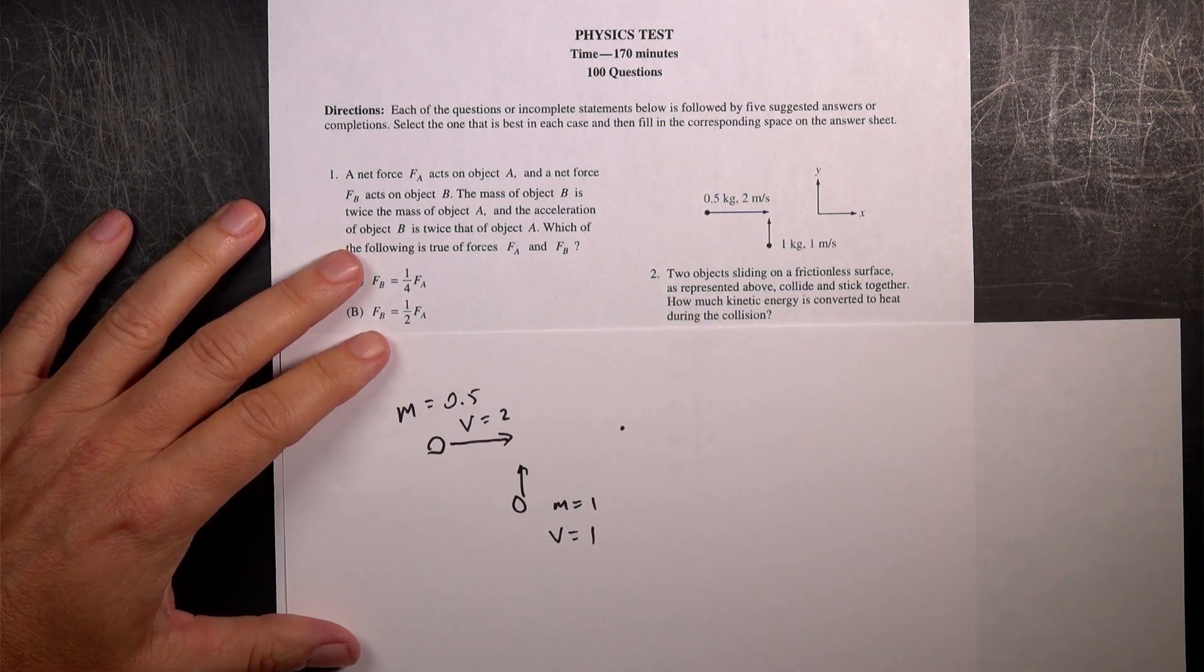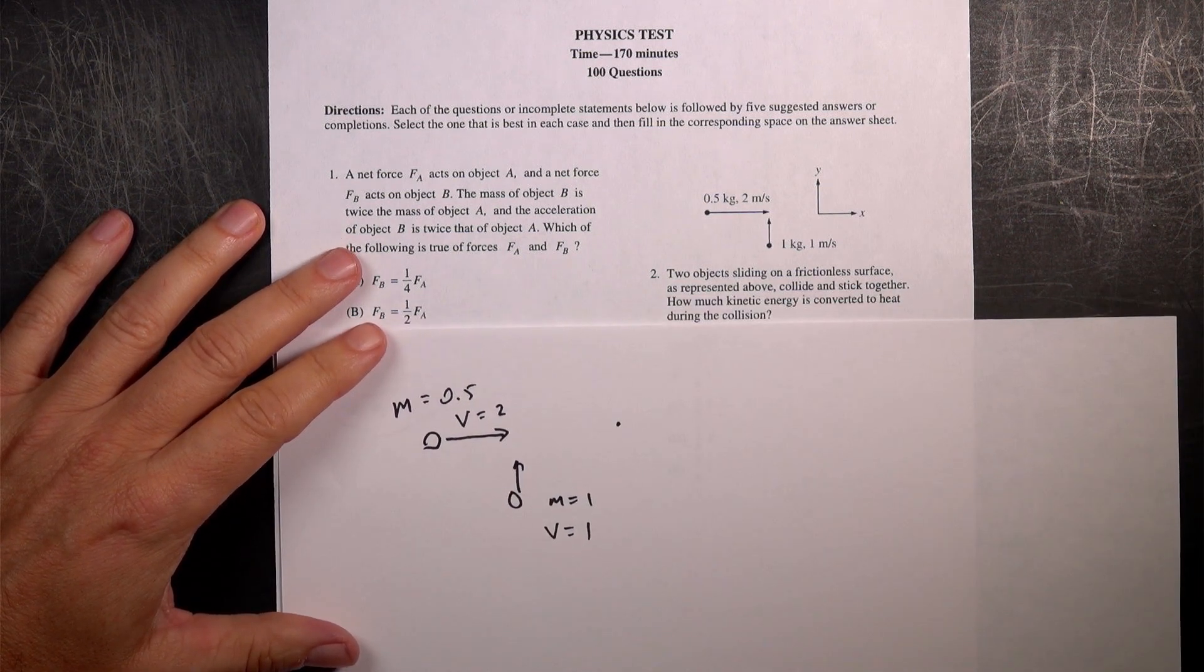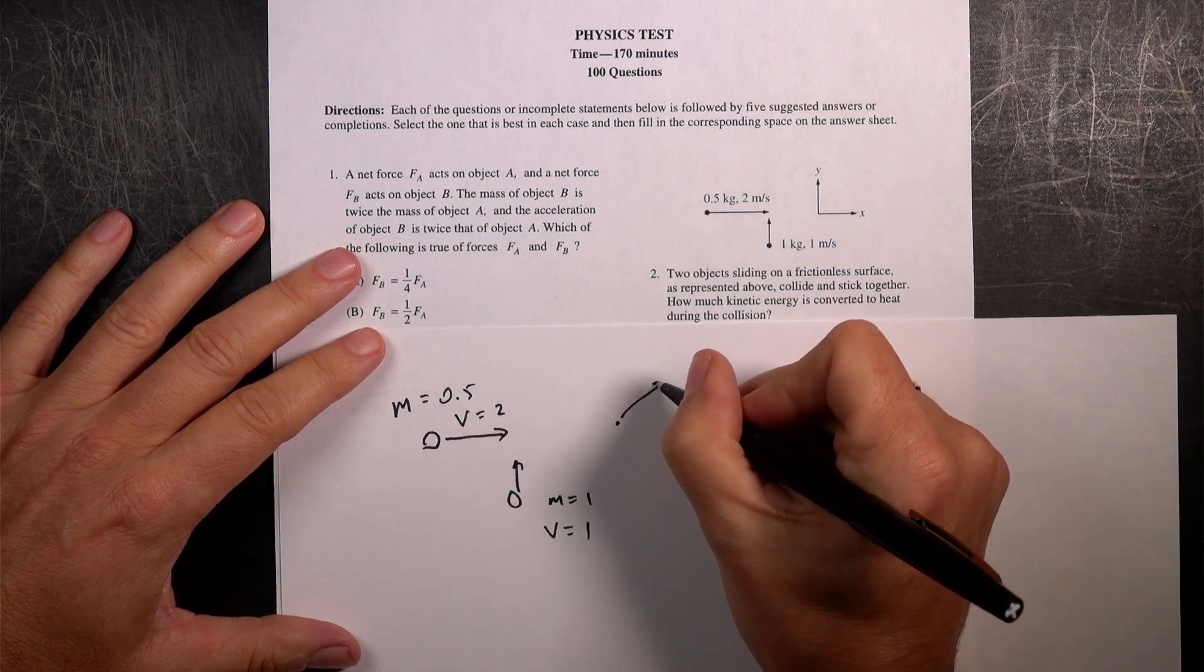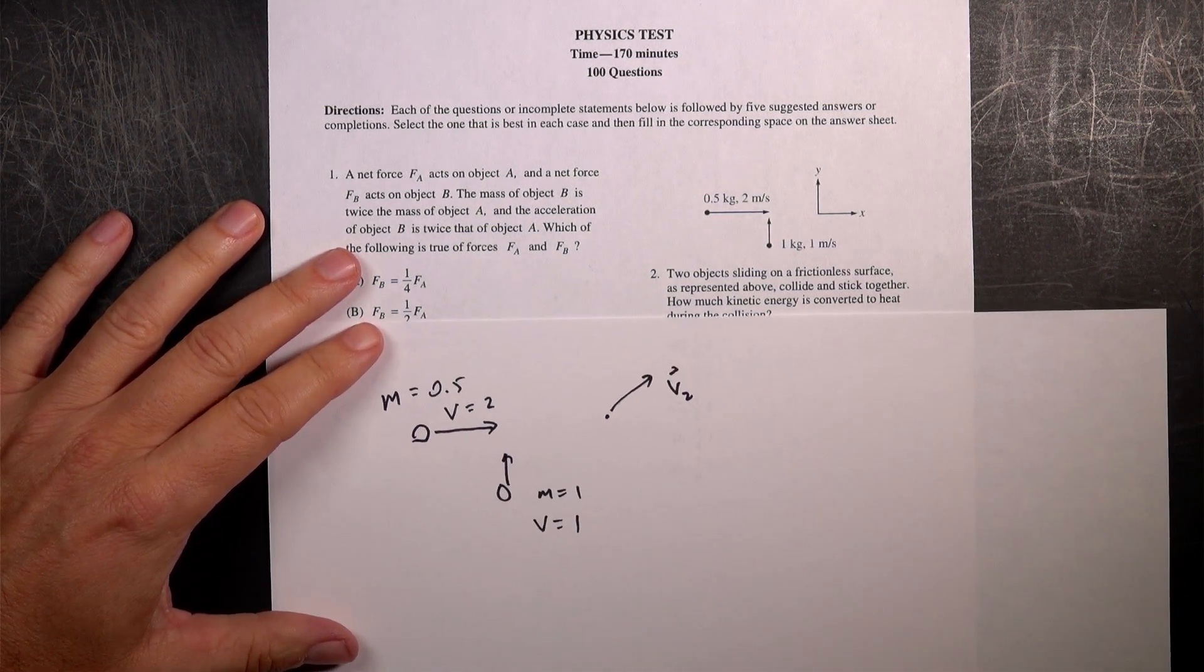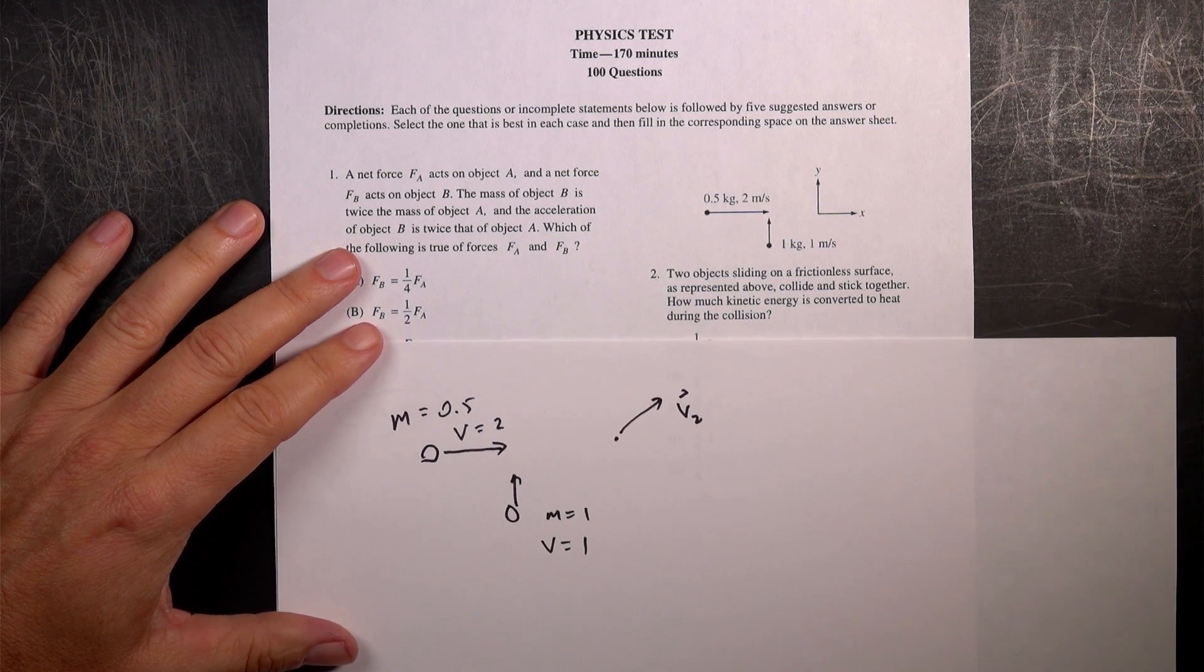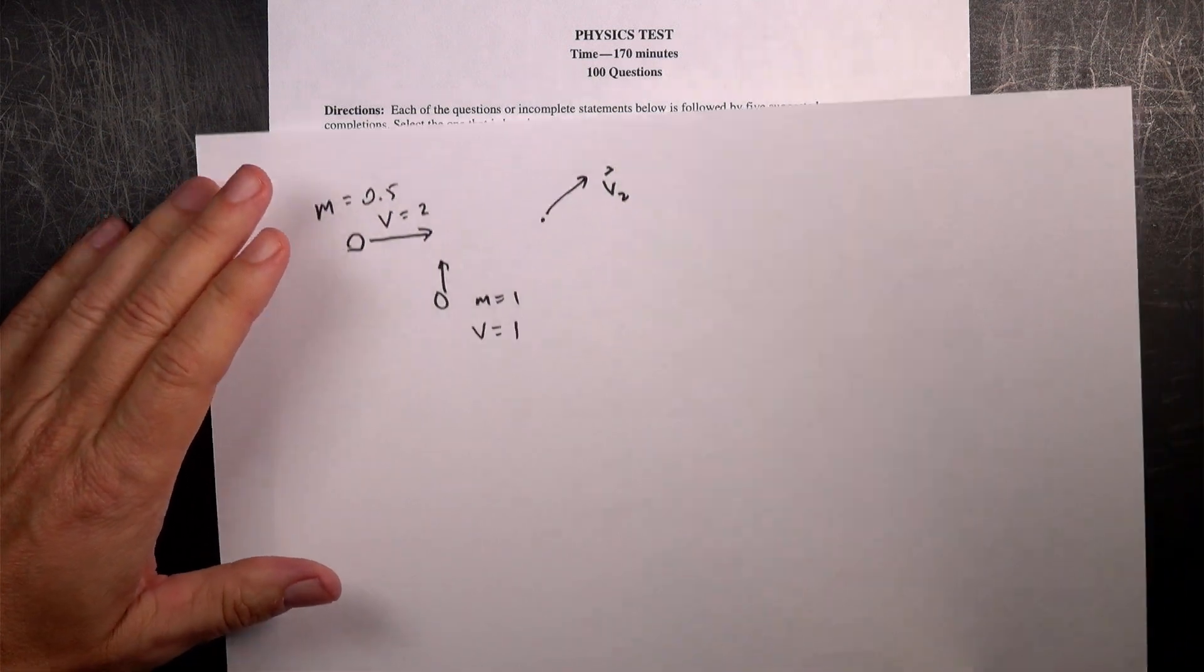Two objects are sliding on a frictionless surface as represented above, collide, and stick together. So call that V2 at some angle. How much kinetic energy is converted to heat during the collision? That's kind of an interesting question.